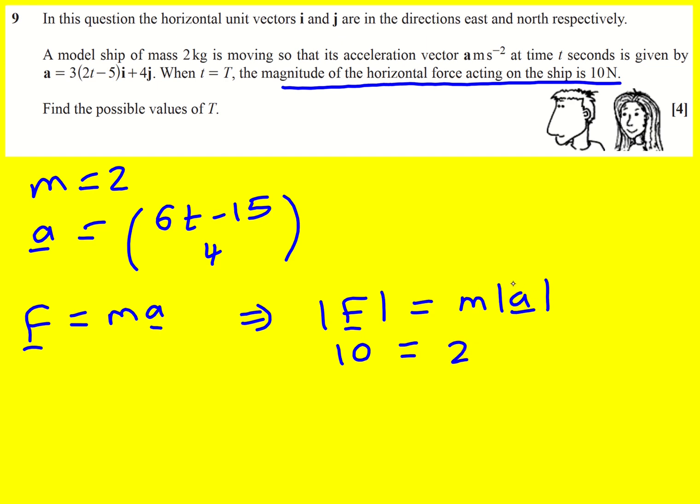So we just need to work out the magnitude of a and we can do that by using Pythagoras theorem because we have a horizontal component which is 6t minus 15 and we have a vertical component which is 4. So when t is equal to capital T, I can just replace it here and it's going to be 6T minus 15 all squared plus 4 squared then square rooted. That's going to be the magnitude of the acceleration and I've got an equation I can deal with.